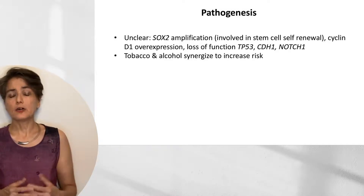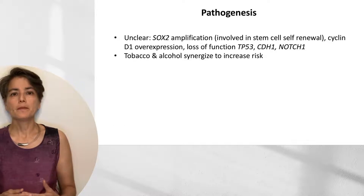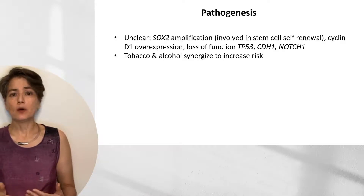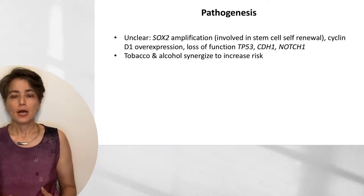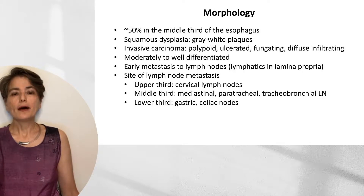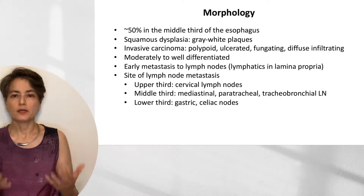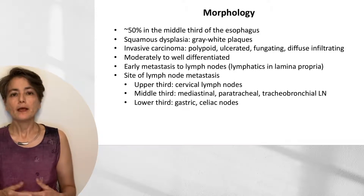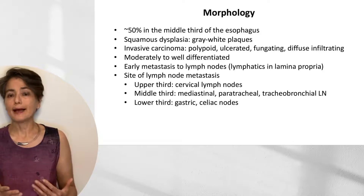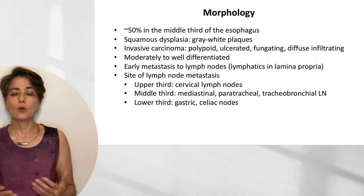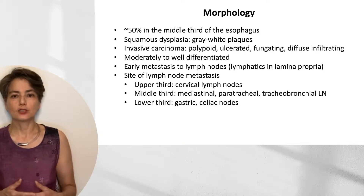The pathogenesis of squamous cell carcinoma is not as clear as in esophageal adenocarcinoma. We know that SOX2, involved in stem cell self-renewal, can be amplified, and we can see cyclin D1 overexpression, as well as loss of function of TP53, CDH1, and NOTCH1. Tobacco and alcohol synergize to increase risk. Morphologically, about 50% are in the middle third of the esophagus, compared to adenocarcinoma in the distal third. Squamous dysplasia appears as gray-white plaques, while invasive carcinoma can be polypoid, ulcerated, fungating, diffusely infiltrating, or deeply invasive. Most show moderate to well differentiation and tend to metastasize early to lymph nodes.